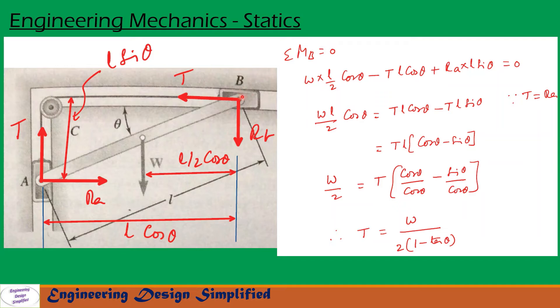Now let us take moments about B. T and RB won't produce any moments about B since they are acting from this point. So this weight W and RA and T will produce moments about B. W produces counterclockwise moment about B, and the horizontal distance from W to this point is L/2 cos theta. So moment due to W about B is W × L/2 cos theta. Similarly, RA produces counterclockwise moment about B: RA × L sin theta. The moment due to T about B is clockwise: T × L cos theta.